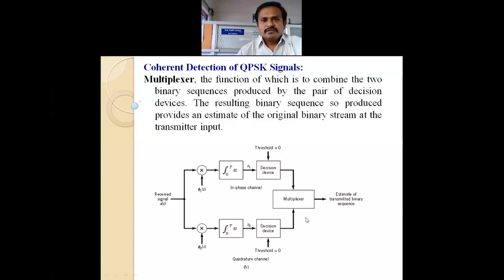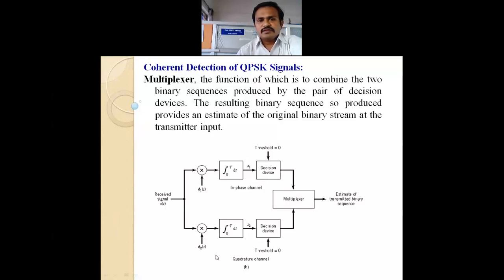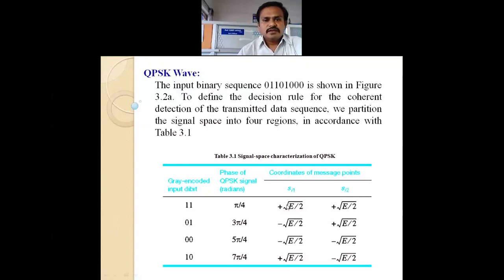This is the coherent detection of a QPSK signal with three main blocks: the correlator, the decision device, and the multiplexer. Now moving towards the generated waveforms.